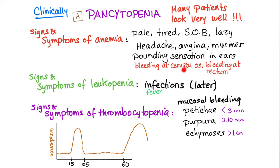If you examine the cervix in a female or a rectum in both male and female, you can get some bleeding — maybe due to thrombocytopenia, which causes mucosal bleeding. Signs and symptoms of leukopenia: infections and fever. Signs and symptoms of thrombocytopenia: platelets are responsible for the primary phase of coagulation, so you will have mucosal or superficial bleeding. You can have petechiae, which are less than 3 mm in diameter; purpura, which is 3 to 10 mm; and ecchymoses, which are more than 1 cm in diameter.